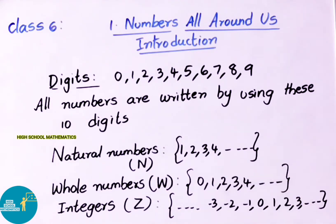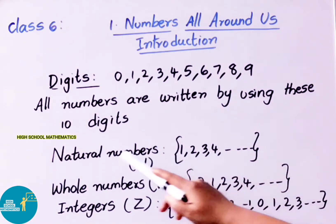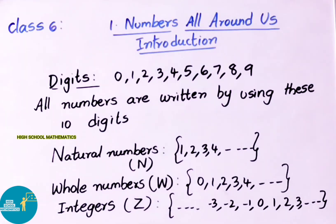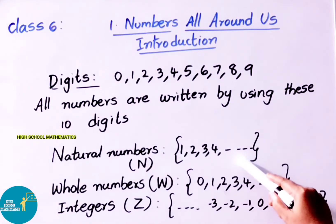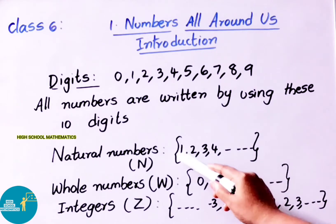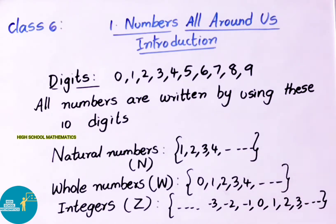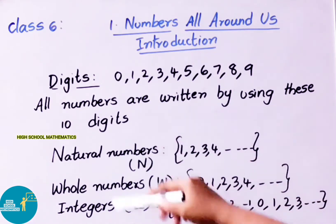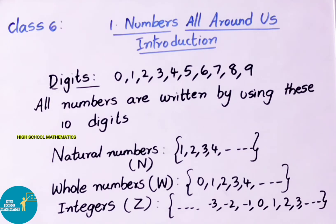Next, what are counting numbers? Counting numbers start from 1: 1, 2, 3, and so on. These counting numbers are called natural numbers. In the natural numbers set, numbers start from 1 — that is, 1, 2, 3, 4, and so on. We denote natural numbers with the capital letter N.